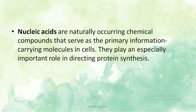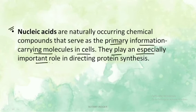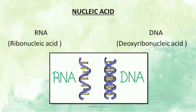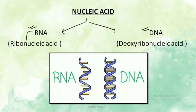Nucleic acids are naturally occurring chemical compounds that serve as the primary information-carrying molecules in cells. They play an especially important role in directing protein synthesis. We mainly have two types of nucleic acid: RNA (ribonucleic acid) and DNA (deoxyribonucleic acid).